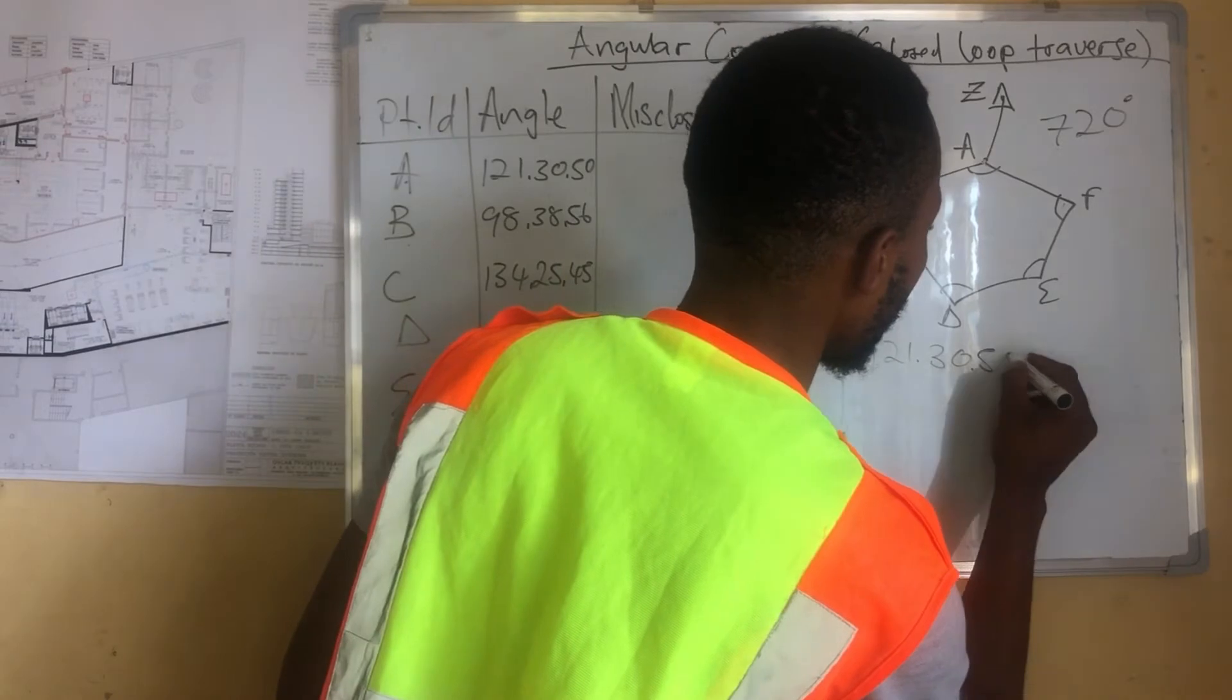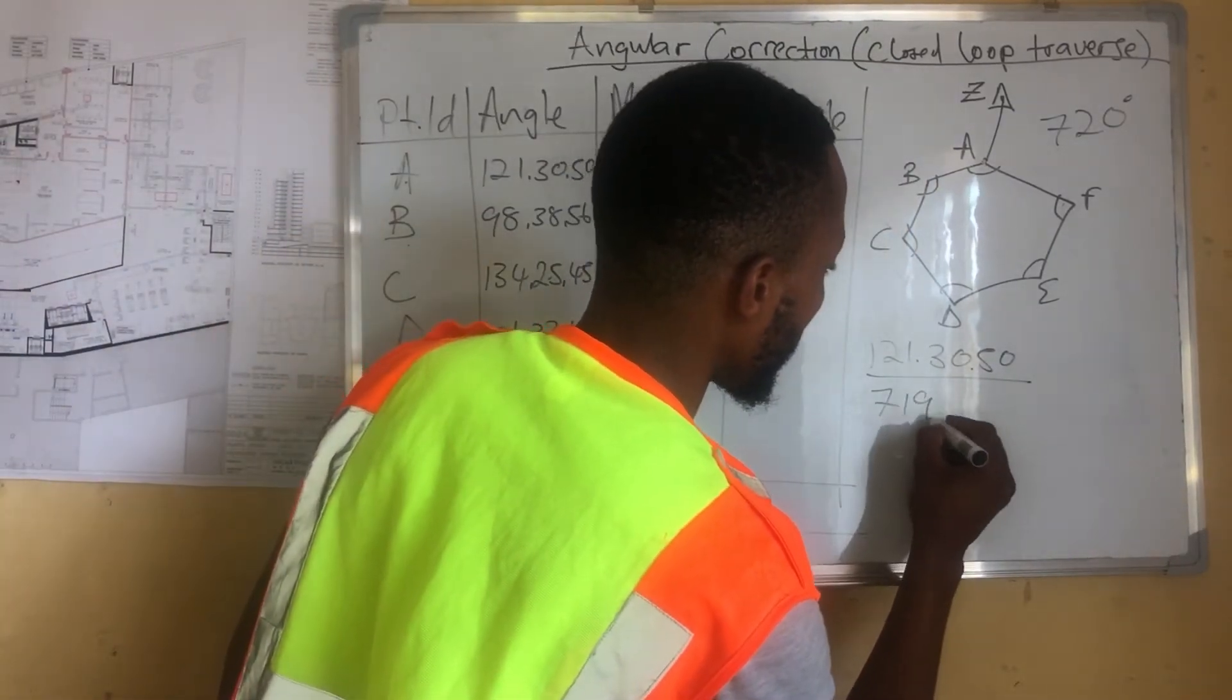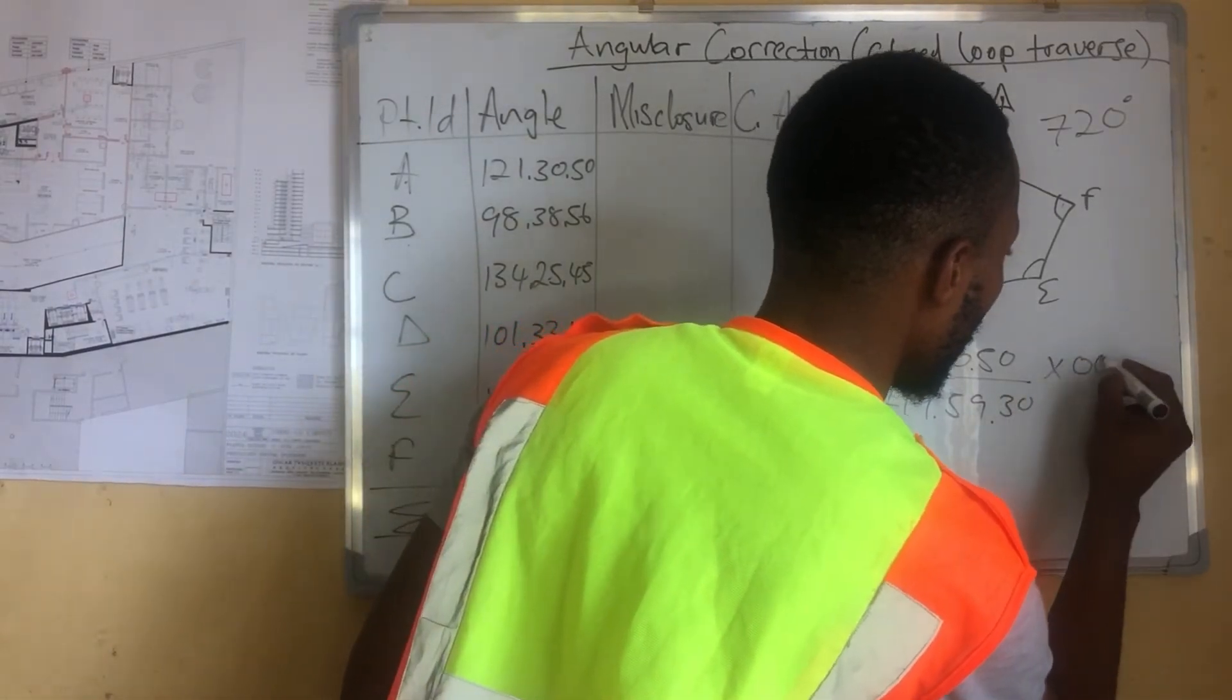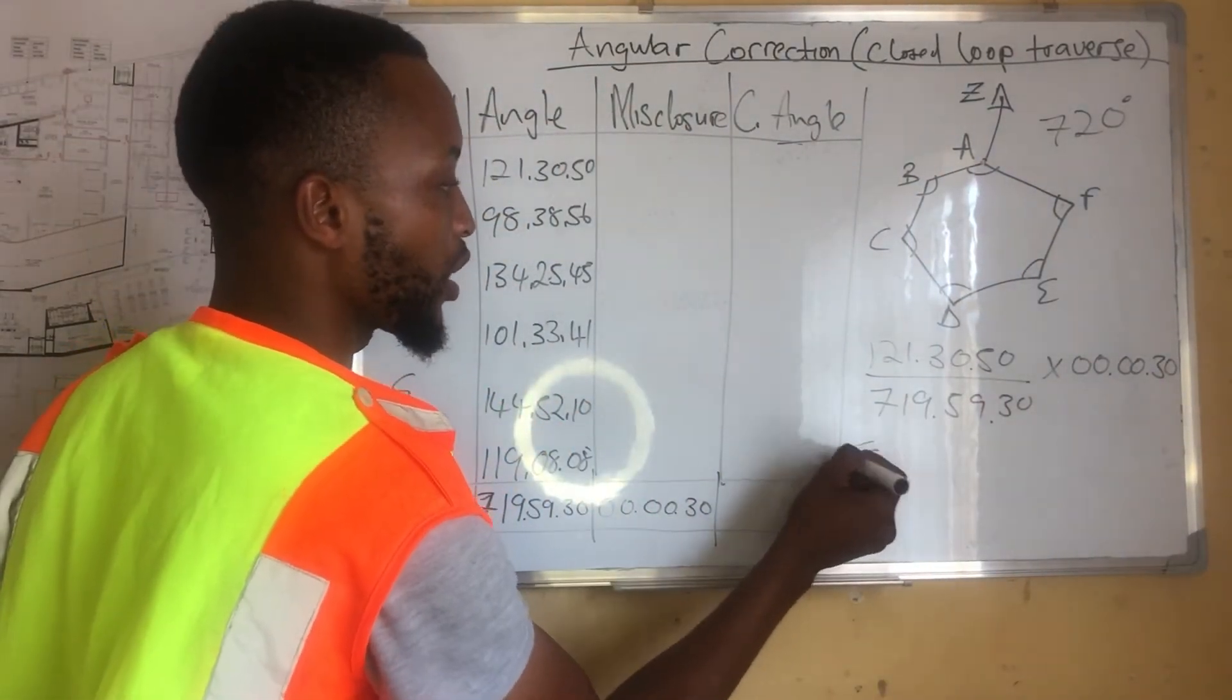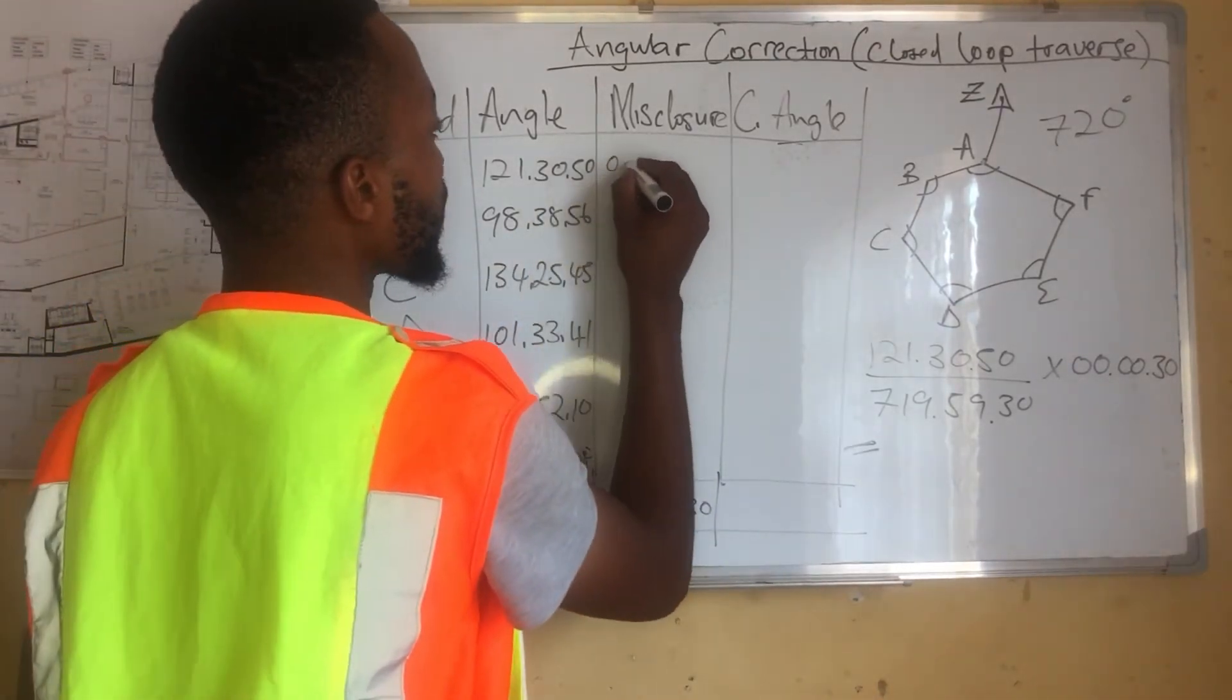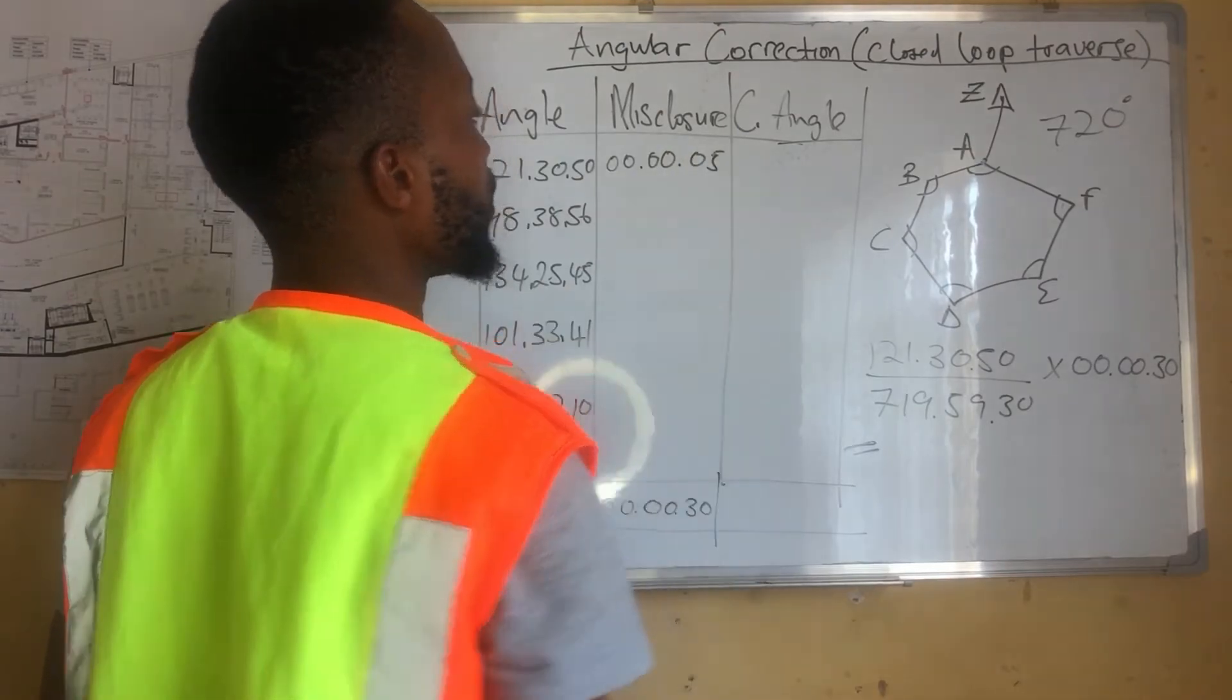We say 121 degrees, 30 minutes, sorry, 50 seconds, over the sum, 719, 59, 30 times the misclosure for the traverse, which is the 30 seconds. For this one, if we punch in our calculators, we get 5 seconds, like this.